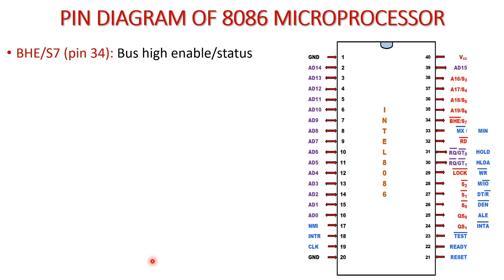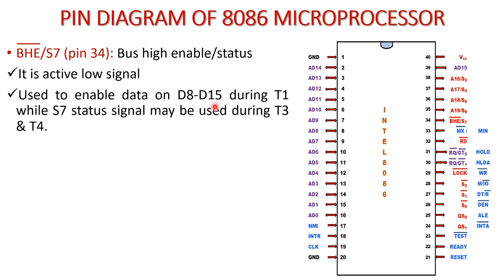The next pin is BHE bar. S7 is multiplexed with the BHE signal. BHE stands for Bus High Enable signal. It is an output signal available at pin number 34. It is used to enable data on the higher order data lines — that is data lines D8 to D15. If a device wants to enable these lines, the BHE signal is utilized. This is used during the T1 clock cycle.